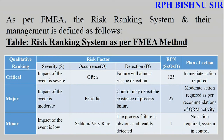As per the Failure Mode Effect Analysis ranking system: Severity — impact of the event is severe means critical; impact is moderate means major; impact is low means minor. Occurrence — often or daily occurrence means critical; periodic means major; seldom or very rare means minor. Detection — will almost escape detection means critical; control may detect the process failure means major; the process failure is obvious and readily detected means minor.